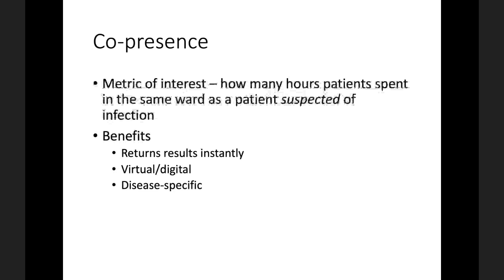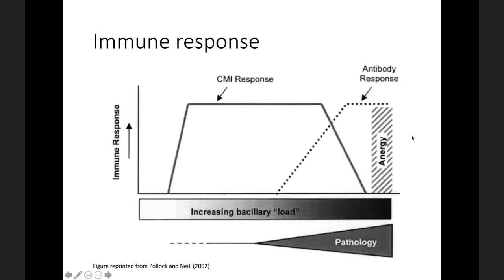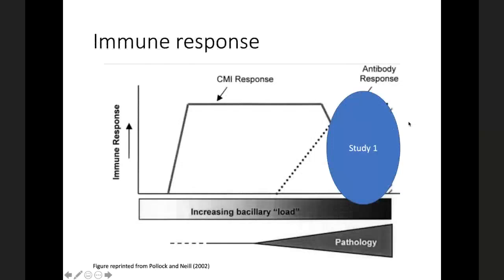To orient you to the two studies, here's a stylized picture of human immune response. You get the introduction of the agent, and as you progress with increasing viral load, you start with your cell-mediated immune response, your nonspecific response. Only later, as symptomatology and pathology increases, do you get the specific antibody response. The first study is going to identify over-symptomatic identified cases on the symptomatic end of the spectrum. The second study is going to try to identify asymptomatic patients prior to pathology using co-presence and additional biomarker data.